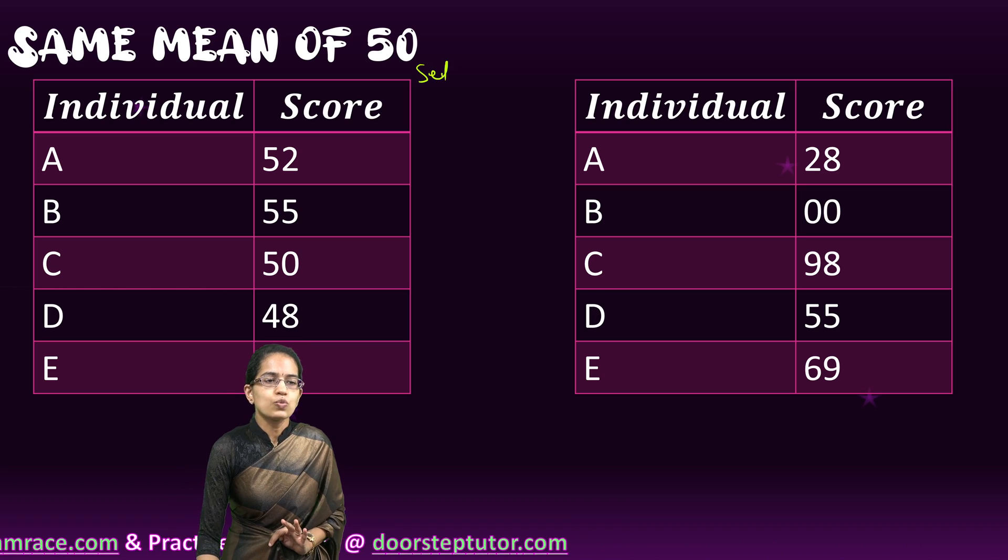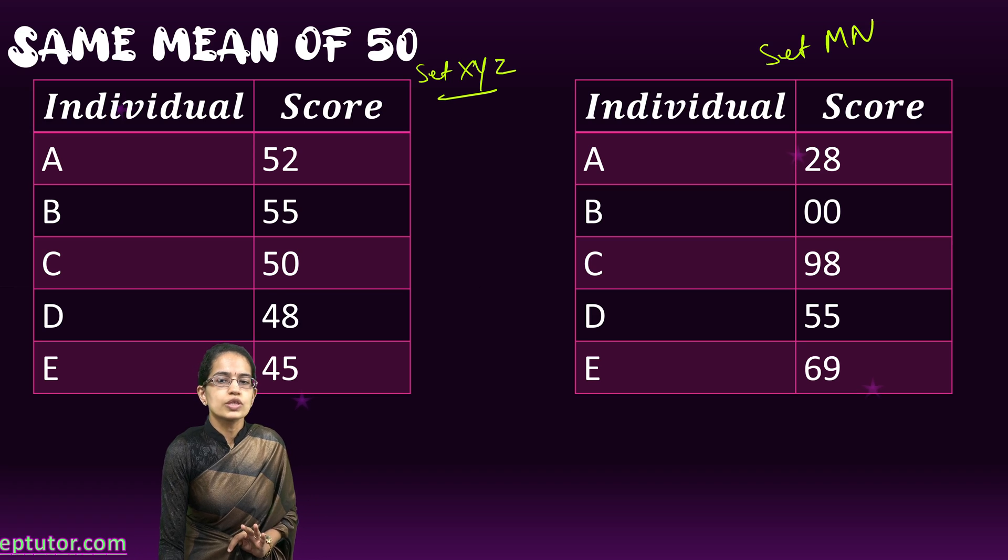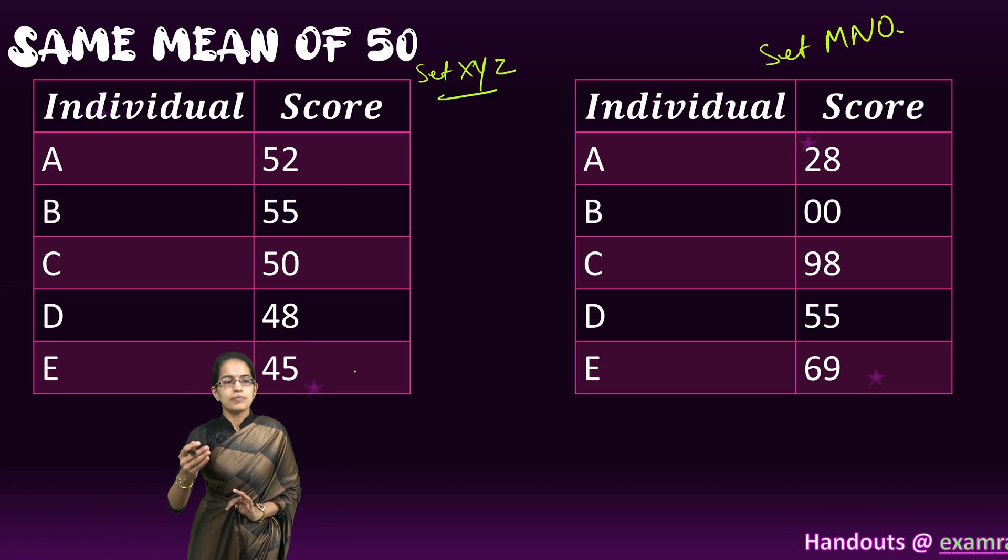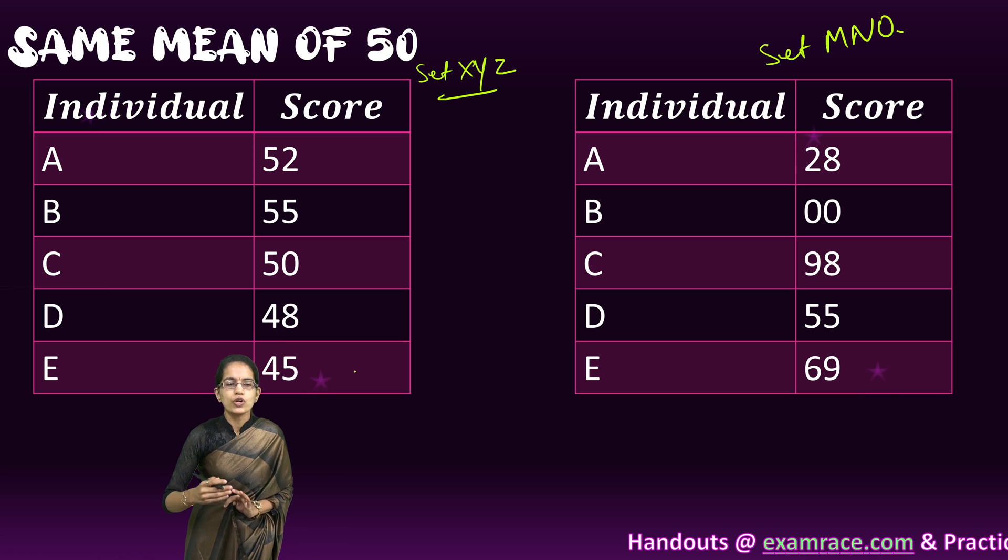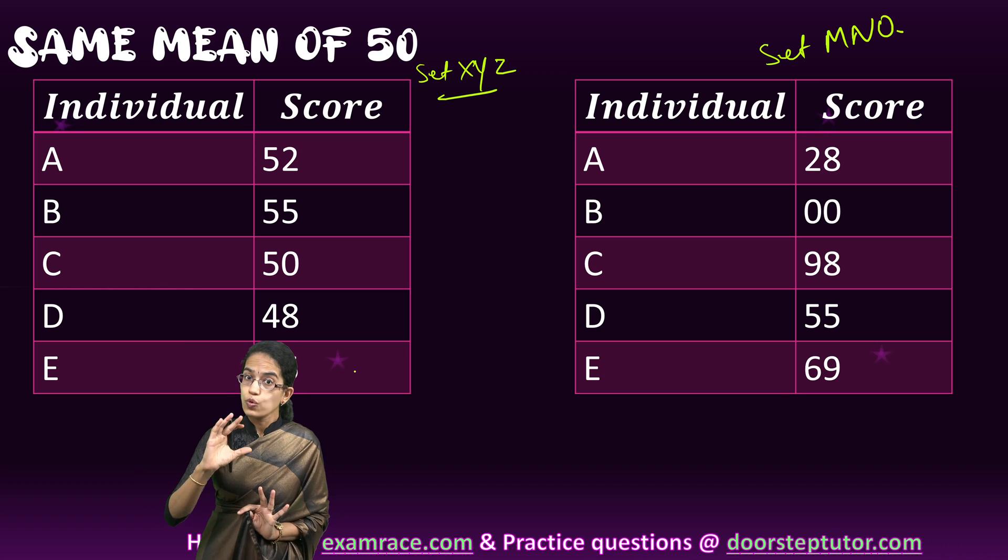Set XYZ, let me keep it as set XYZ and set MNO. This set XYZ has five variables: 52, 55, 50, 48, and 45. Now here the values are very close to 50.